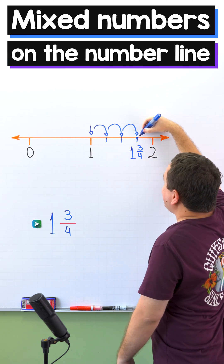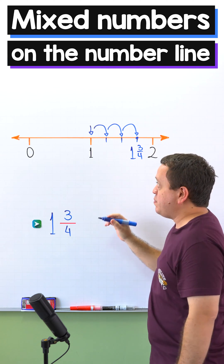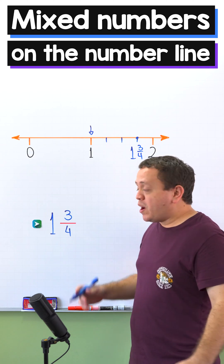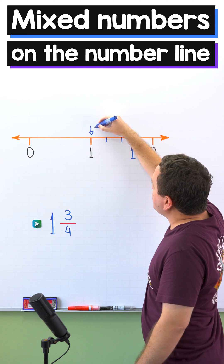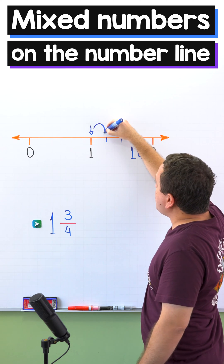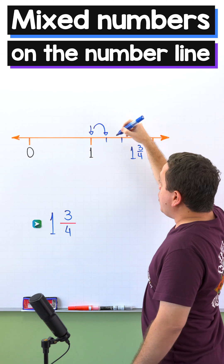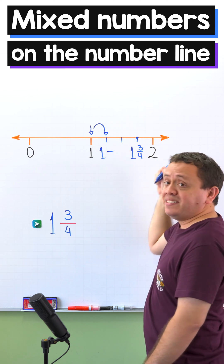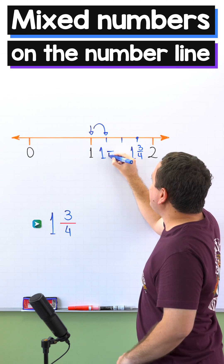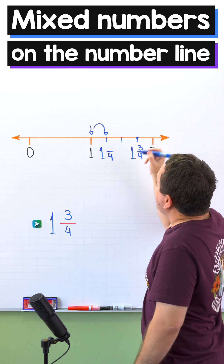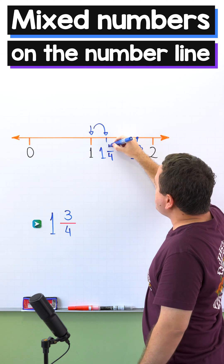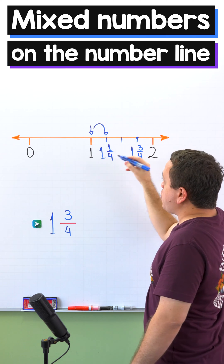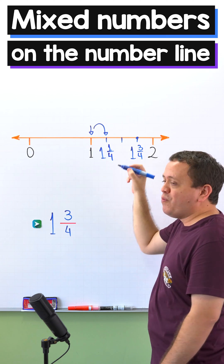Never forget to draw a dot at this location. Now let me erase the board. What would happen if starting from one we move to the right one part? We have started from one, we have divided this segment into four equal parts, and finally we move to the right one part. Therefore, this is the location of the mixed number one and one-fourth.